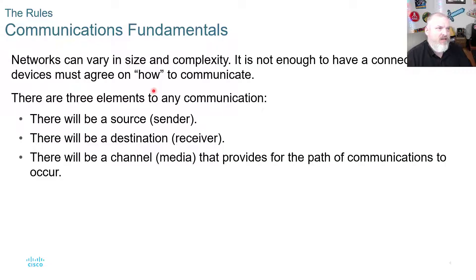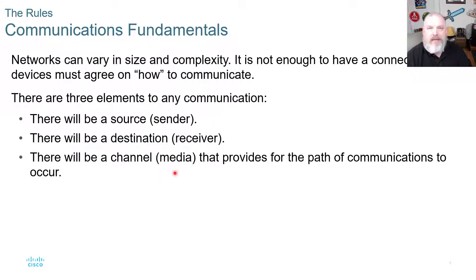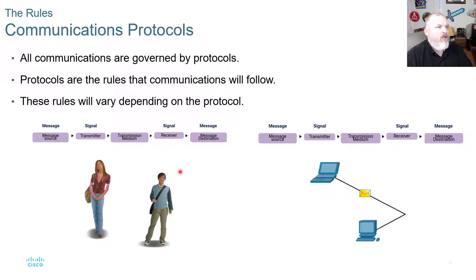The Rules. Networks can vary in size and complexity. It's not enough to have a connection — devices must also agree on how they're going to communicate. There are three elements to any type of communication: a sender, a receiver, and some type of medium. If two people are trying to communicate and one is speaking French while the other speaks English, they won't necessarily understand each other unless they have a common language.